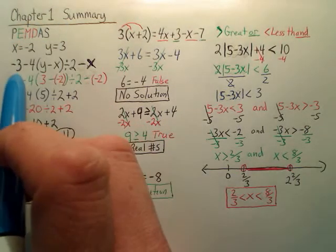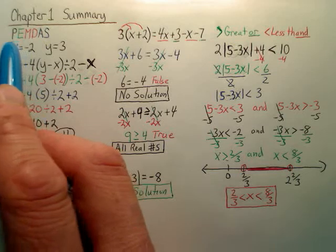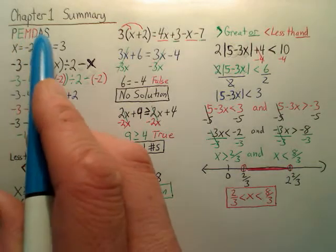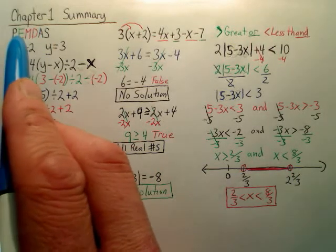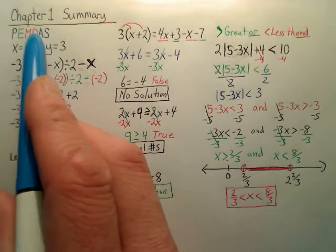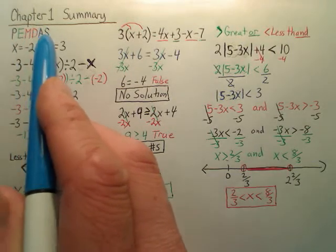Chapter 1 Summary. The first thing we deal with is PEMDAS. Please excuse my dear Aunt Sally. You go parenthesis, exponents, multiply, divide left to right, add, subtract left to right.